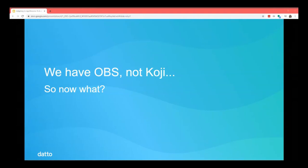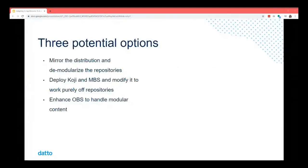So that's kind of a problem — we have OBS and not Koji. There were three potential options we explored. One was to mirror the distribution and demodularize the repository — decompose the app streams into regular repositories representing the combinations of streams so they can be used by plain old systems that don't understand app streams today.